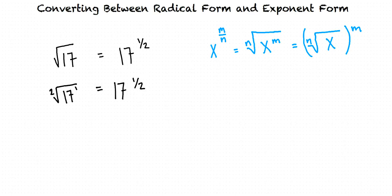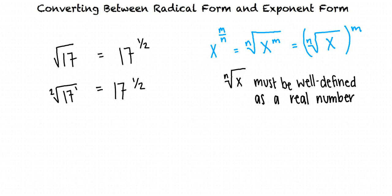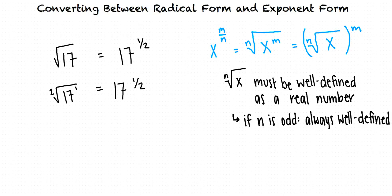Is that conversion fact always true? In order for the equations to be true, the nth root of x must be well defined as a real number. It is always well defined when n is odd. When n is even, it is well defined only when x is greater than or equal to 0.